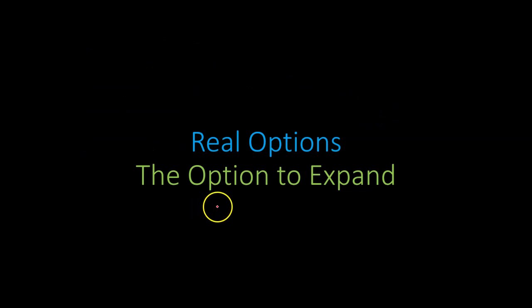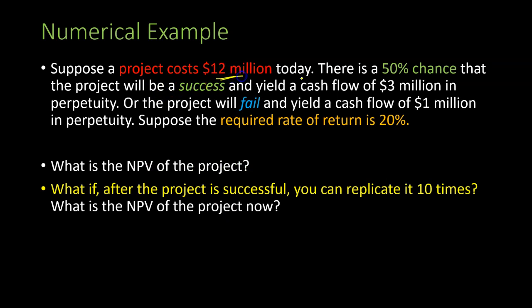I'm going to show you through a simple numerical example how you can evaluate a project in which you have the option to expand on its success, and how you can determine the worth of that option. Suppose a project costs $12 million today. There is a 50% chance that the project will be a success and yield a cash flow of $3 million in perpetuity, or the project will fail and yield only $1 million in perpetuity. Suppose further that your required rate of return, denoted by K, is 20%. What is the NPV of the project? And what if, after the project is successful, you can replicate it 10 times — exercising your option to expand on your success?